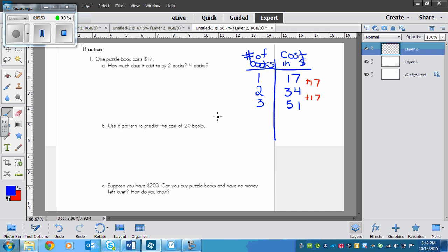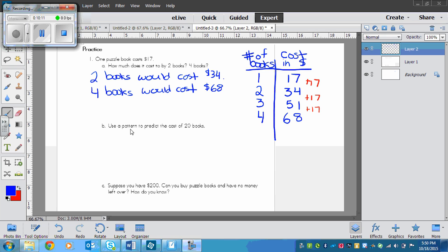And then 4 books would cost another plus $17. So 1 plus 7 would be $8, and 5 plus 1 would be $6. So 2 books would cost $34 and 4 books would cost $68.